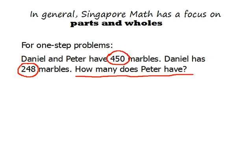I know what I'm looking for — how many marbles Peter has. What are our action words? I'm looking at Peter and how many. Now that I've boxed my action words, I want to do a little analyzing. I need to ask myself, do I have the whole? Do I have parts? It looks like I have a whole: Daniel and Peter have 450 marbles together, so the whole is 450. Daniel has 248 marbles — that's a part. What I'm missing is the other part: how many Peter has.